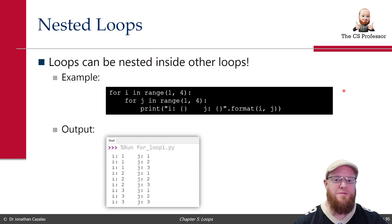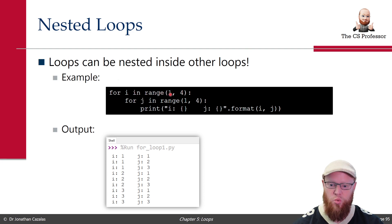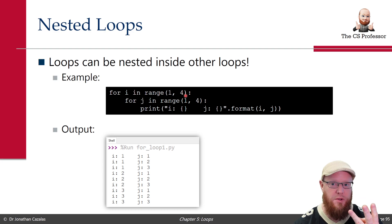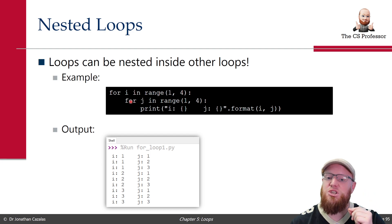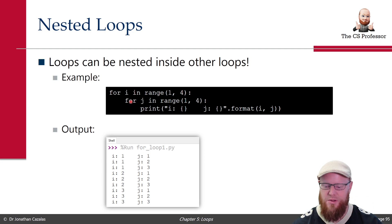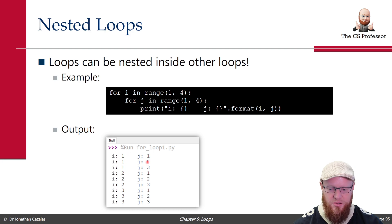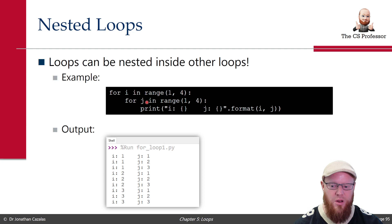Here's the output just to revisit this as a warm-up. We have this outer loop for i in range(1, 4), so it's going to loop 3 times when i is 1, when i is 2, and when i is 3. When i is 1 — the very first iteration of that outer loop — the inner loop itself will iterate 3 times when j is 1, 2, and 3. So if you notice the output, when i is 1, j will get the values 1, 2, and 3.